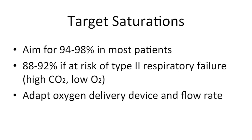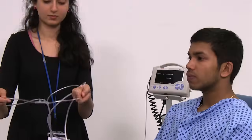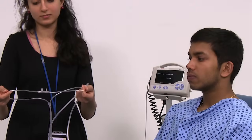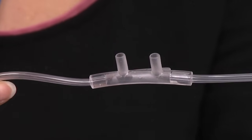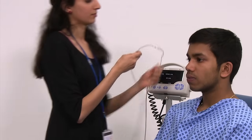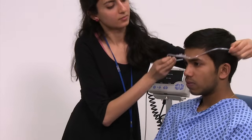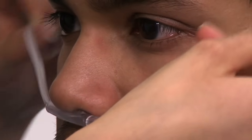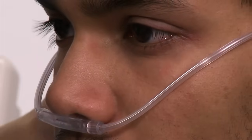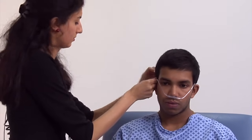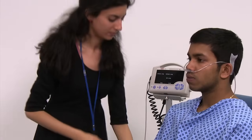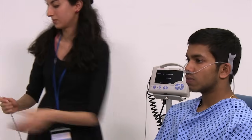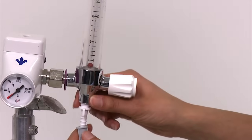We are going to begin by administering oxygen through nasal cannulae. This is recommended as suitable for most patients with both type 1 and type 2 respiratory failure. This is a hollow tube with two prongs which insert into the nostrils, and it can be secured in place by taping it behind the ears. The other end of the tube is connected to oxygen tubing, which then attaches to the oxygen cylinder.